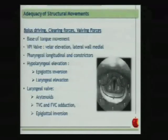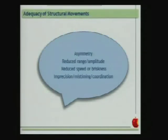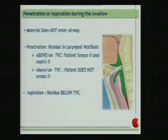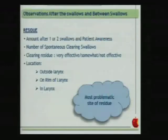We assess bolus driving by examining base of tongue movement, velar elevation, pharyngeal muscles, hyolaryngeal elevation, epiglottic inversion, laryngeal elevation, laryngeal valve, closure of the arytenoids, true and false vocal cord adduction, and epiglottal inversion. We look for asymmetry, reduced range or amplitude, and reduced speed during swallowing. We document any aspiration or penetration above or on the true vocal cords, the patient's sensitivity, and any aspiration below the true vocal cords with the patient's reaction.